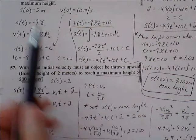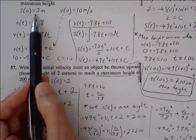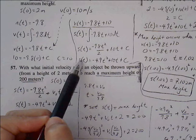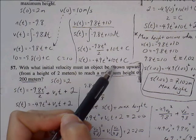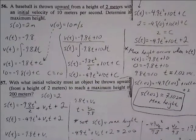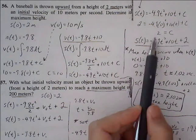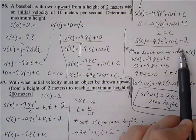We have an ordered pair from the position function that we can plug in. 2 plugs in for s(t), 0 plugs in for t. So we get 2 equals 0 plus 0 plus C, so C equals 2. Now we have our updated position function.